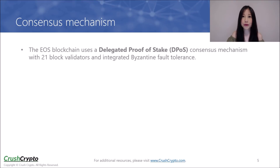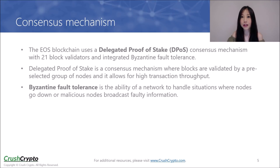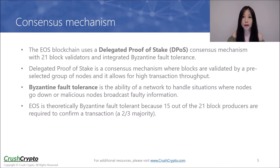EOS uses Delegated Proof of Stake, or DPoS for short, as its consensus mechanism. It utilizes 21 block validators and integrated Byzantine fault tolerance. With DPoS, blocks are validated by a pre-selected group of nodes and allows for high transaction throughput. Byzantine fault tolerance is the ability of a network to handle situations where nodes go down or malicious nodes broadcast faulty information. EOS is theoretically Byzantine fault tolerant because 15 out of the 21 block producers are required to confirm a transaction — in other words, a two-third majority is needed.